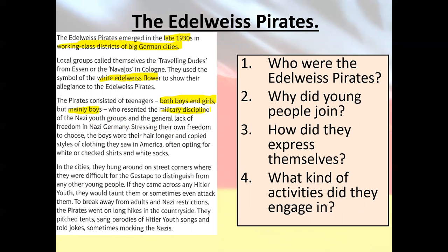They resented the military discipline of the Nazi youth movement. It was all about freedom of choice: wearing longer hair, wearing clothes they liked — particularly American-style clothes like white socks and checked shirts. They often hung around street corners, and because they had no unified dress code it was quite hard for the Gestapo to pick them out from other young people, as they blended in.